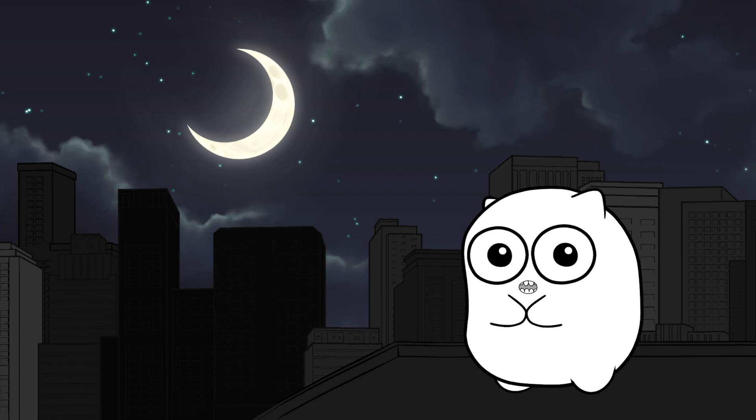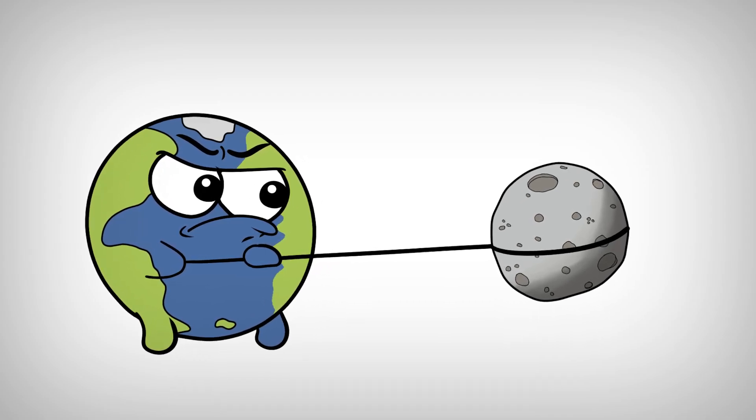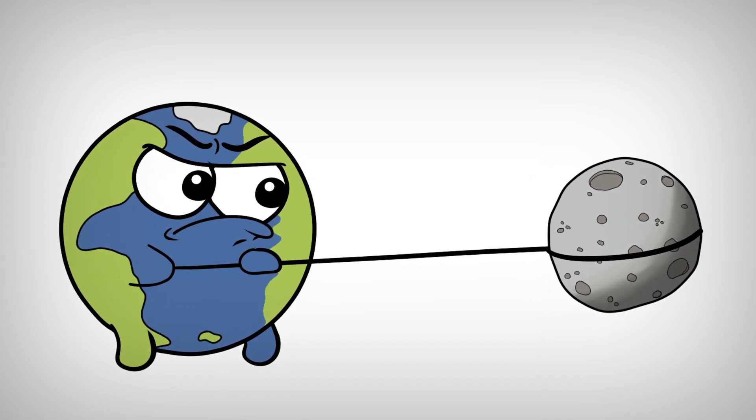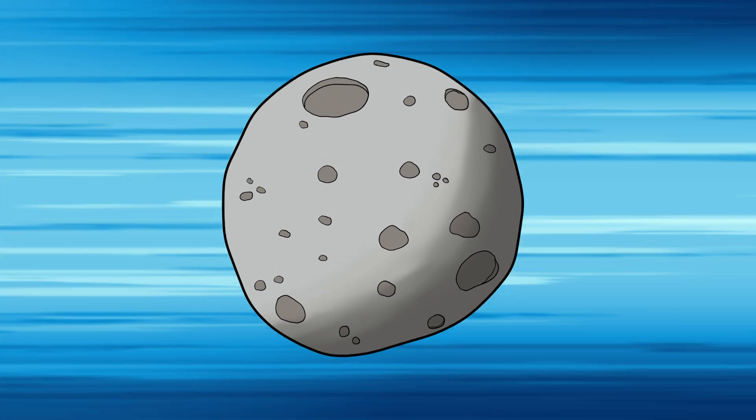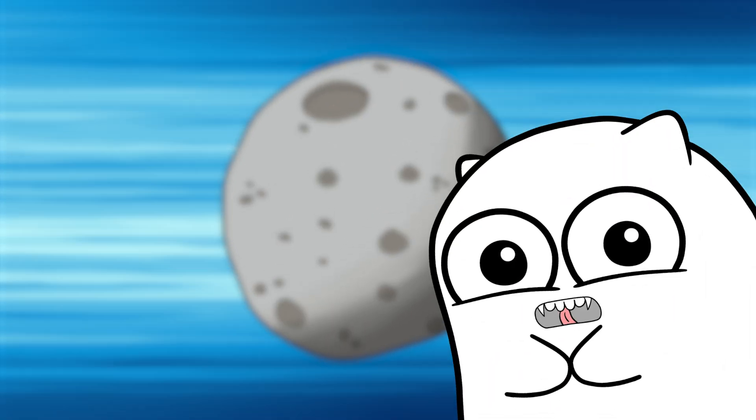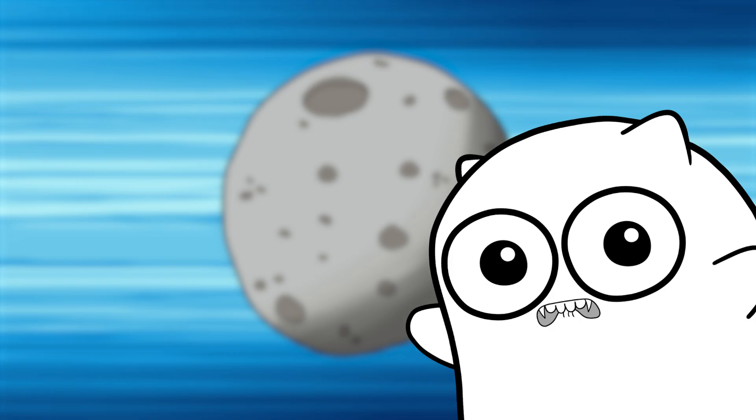Ever asked yourself why the moon stays up there in the first place? Well, Earth's gravity is constantly pulling on the moon that is far enough away from us and moves quick enough to overcome Earth's gravity. That also means that if we want to bring it closer to us, we just need to slow it down.